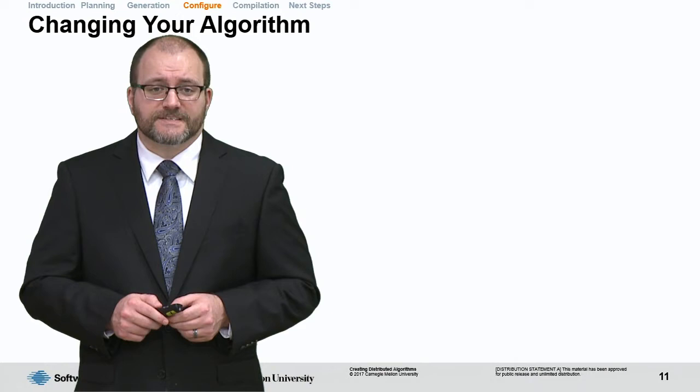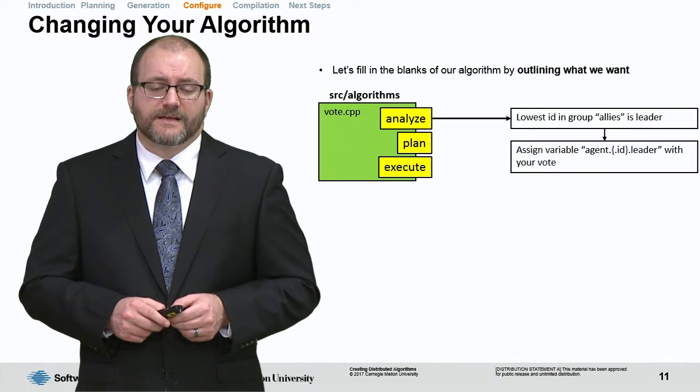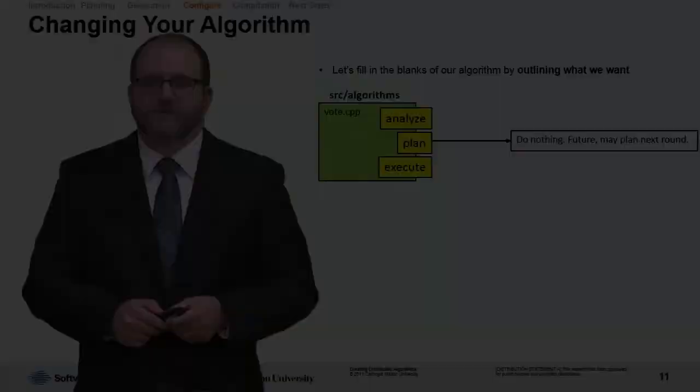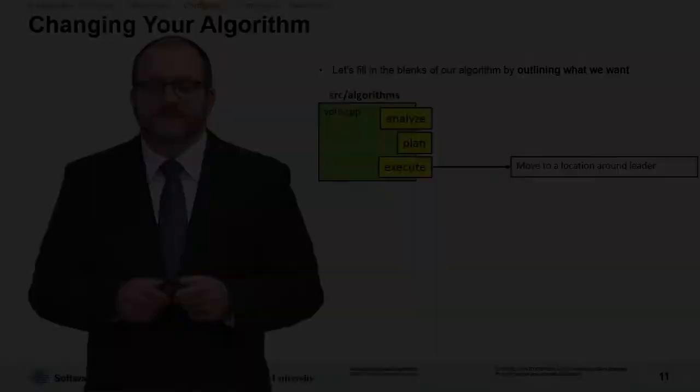In the analyze method, we're going to look inside of our group allies for the leader. The person with the lowest ID is going to be the leader. We're going to assign a variable agent.whatever our own ID is.leader to the person we vote for, the agent we vote for to be the leader of our formation. We're not going to do anything special in the plan method. Instead, we're just going to use the function that gpc generated for us. In the execute function, we're going to move to a location around the leader based on our own ID.